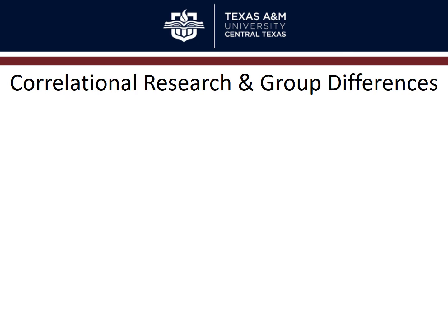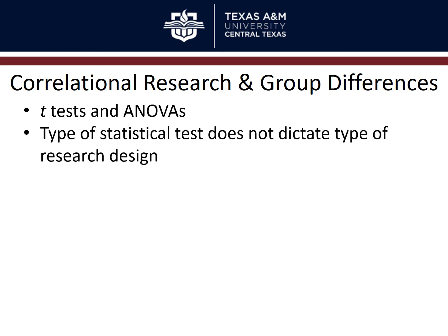A lot of correlational research looks at group differences rather than correlation coefficients. When looking at group differences, we use t-tests — independent or dependent groups — and ANOVAs: univariate, factorial, and repeated measures. The type of statistical test doesn't dictate what type of research design was used. People often assume that seeing an ANOVA means it's an experiment, but that's wrong. If no IV was manipulated, if people weren't randomly assigned to groups, if you're just looking at existing group differences, that's a correlational study. Correlational studies don't always use correlation coefficients to analyze results.